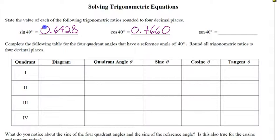And what is the tangent of 40 degrees? It's point 8, 3, 9, 1 — so 0.8391.